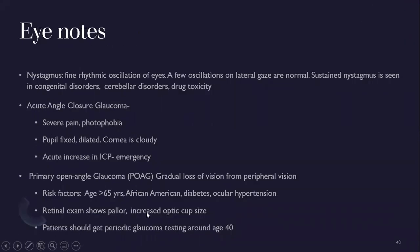Nystagmus is a fine rhythmic oscillation of the eyes — a few oscillations on lateral gaze is normal. Sustained nystagmus is seen in congenital disorders, cerebellar disorders, and drug toxicity. Acute angle-closure glaucoma presents with severe pain, photophobia, a fixed and dilated pupil, and a cloudy cornea — it indicates an acute increase in intracranial pressure and is an emergency. Primary open-angle glaucoma is a gradual loss of peripheral vision; risk factors include age over 65, African-American race, diabetes, and ocular hypertension. The retinal exam shows pallor and increased optic cup size. Patients should get periodic glaucoma testing starting around age 40.